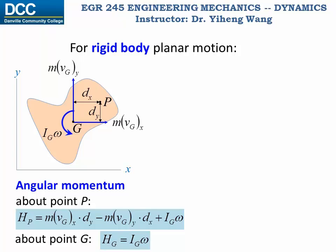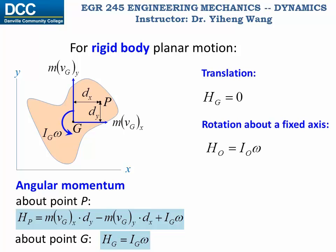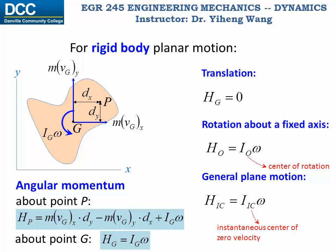Let's look at some special cases. For translation, since the rigid body has no angular velocity, HG equals zero. However, its angular momentum about other points is not zero — it equals the moment of its linear momentum. For rotation about a fixed axis, the angular momentum about point O, the center of rotation, equals IO·omega, where IO is the mass moment of inertia about the center of rotation. For general plane motion, if we locate the instantaneous center of zero velocity, the angular momentum about IC equals IIC·omega, where IIC is the mass moment of inertia about the instantaneous center.